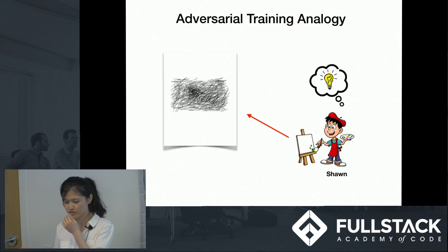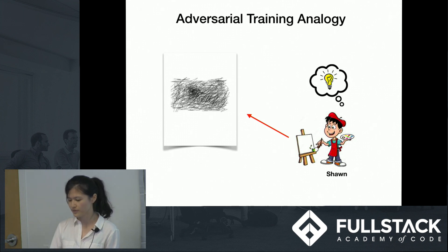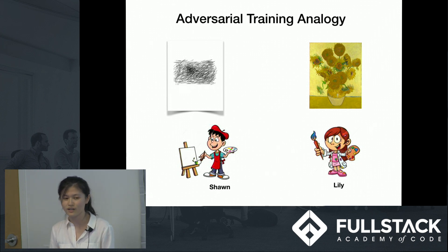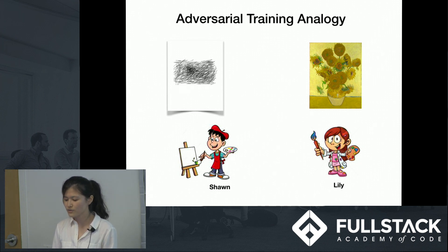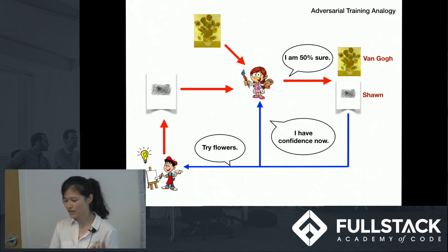Let's take an analogy to explain the concept of GANs. Say there's a boy named Sean, and one day he wants to draw a painting. He doesn't have a clear idea, so the first version of his painting is a scribble. Fortunately, Sean has a friend named Lily, who is happy to help him. She plans to teach Sean to paint Van Gogh's famous piece, Sunflower, step by step. While Sean is learning to draw Sunflower, Lily is also learning to correctly distinguish the famous painting from Sean's paintings. In each round, Lily is presented with two paintings — one from Sean and one is the real Sunflower.